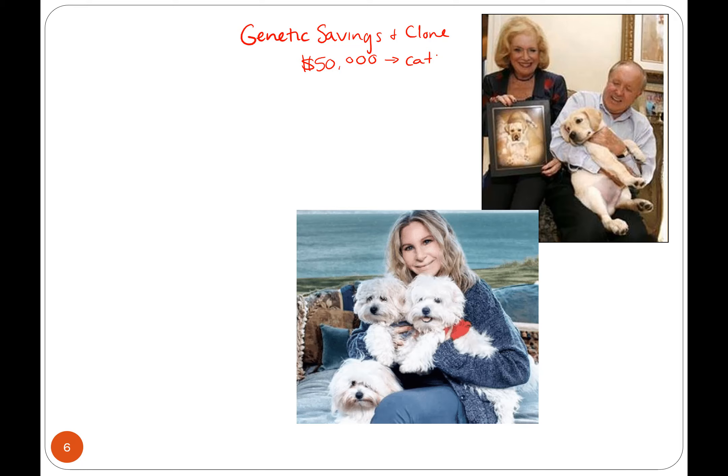Dog owners were more interested. They said they had cloned at least 600 dogs by 2015 at about $100,000. Genetic Savings and Clone is gone, but what they also would do — the savings part — was store down tissue from your animal so that when the animal passed they would be able to clone it. Dogs, like I said, was a little bit more expensive.